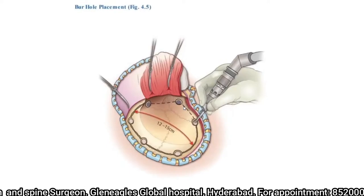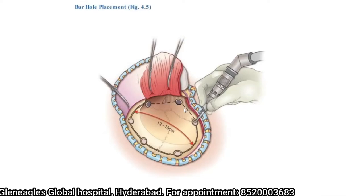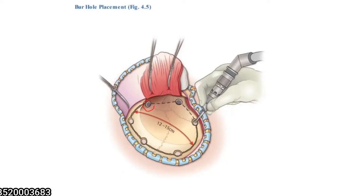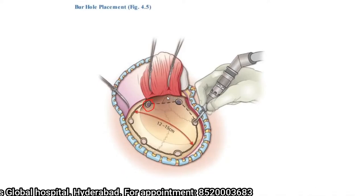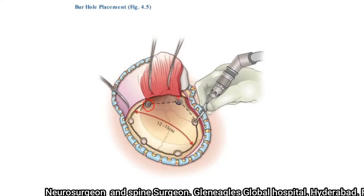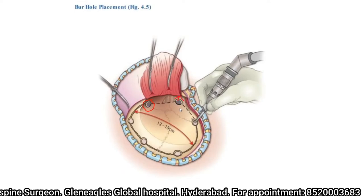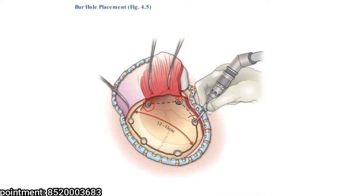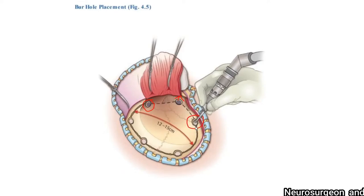We use a high-speed drill to place the burr holes so that the chances of penetrating the dura mater are less. The first burr hole is the classical key burr hole. The second is placed at the root of the zygoma, as low down as possible on the squamous temporal bone — the more towards the base of the skull, the easier it is to expose the middle cranial fossa. The third burr hole is above the mastoid; do not open the mastoid air cells. The remaining burr holes are placed along the frontoparietal region.